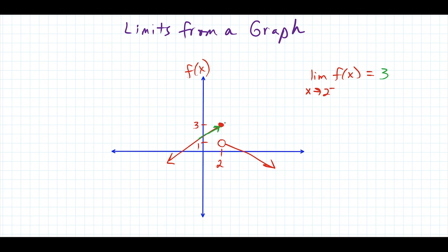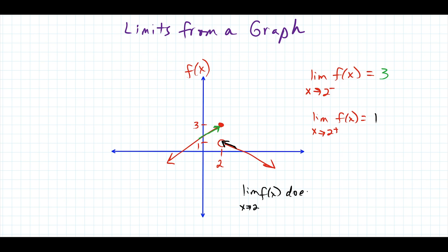When we approach 2 from the right side, we're heading to a y value of 1. So the limit as x approaches 2 from the right side is equal to 1. Anytime you have two different limits when approaching from the left and right, the limit in general — the limit as x approaches 2 of f of x — does not exist.